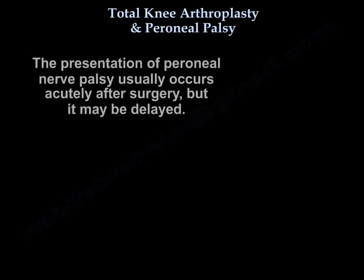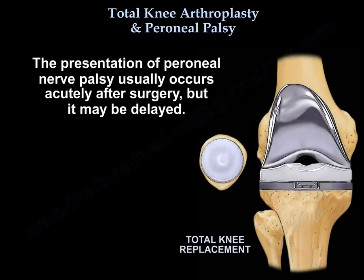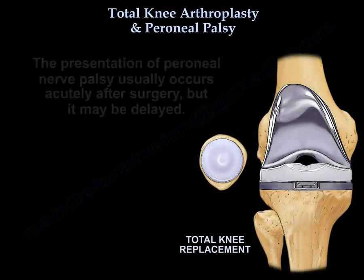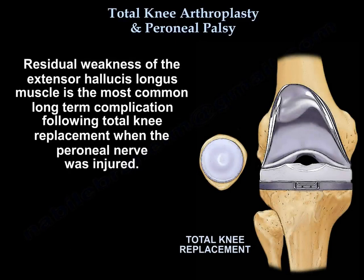The presentation of peroneal nerve palsy usually occurs acutely after surgery, but it may be delayed. Residual weakness of the extensor hallucis longus is the most common long-term complication following total knee replacement when the peroneal nerve was injured.